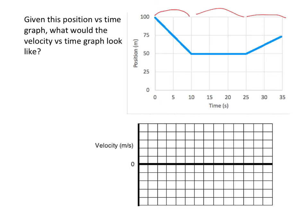So it starts off with a negative slope, right? It's got a rise of negative 50 over a run of 10. So it starts off at a velocity of negative 5. So if I want to label this negative 1, negative 2, negative 3, negative 4, negative 5, it starts at negative 5, and it does that for about 10 seconds.